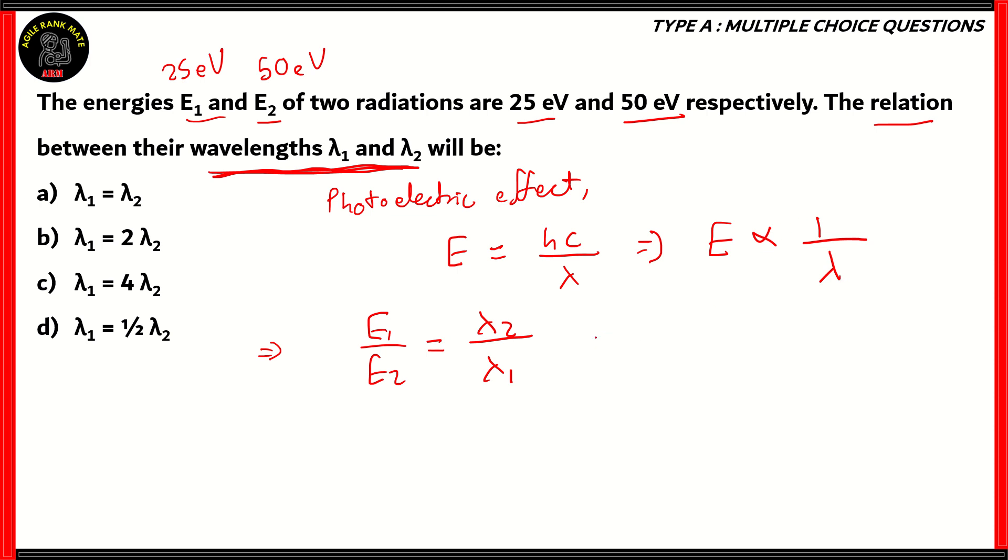Now we know the values of E1 and E2, 25 and 50 respectively. So we just put the values here. Therefore 25/50 gives you λ2/λ1. Now 25 goes into 50 twice, so therefore λ2/λ1 equals 1/2. On cross multiplying, we get λ1 = 2λ2.